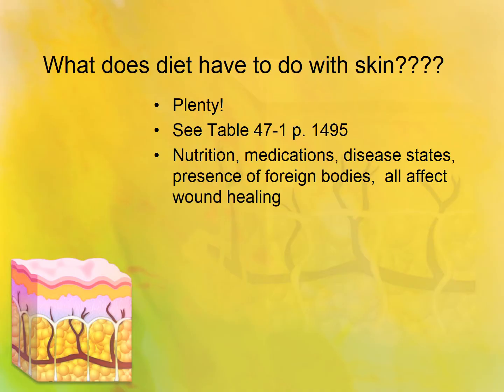Think about it. If you have impaired circulation, say from a heart condition, which we know that children can have, will you get good skin healing? No. What if you take corticosteroids for a chronic condition? No. Impaired wound healing, and not just from major pressure ulcers, but from little things like scrapes, bruises, and small cuts all affect children. All of that is affected by the factors listed in Table 47-1. You really should review that table.